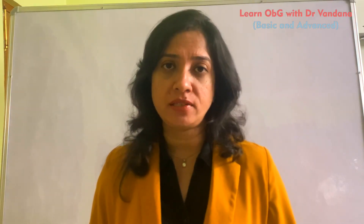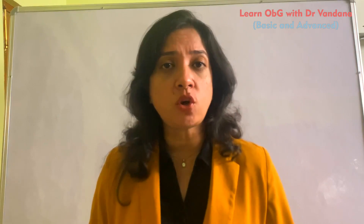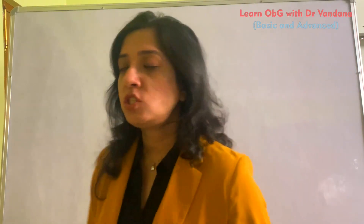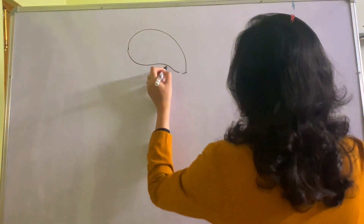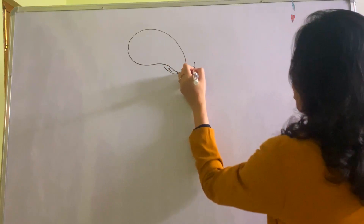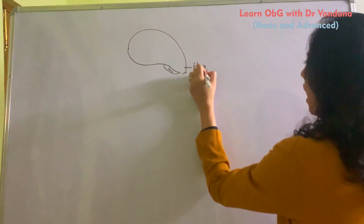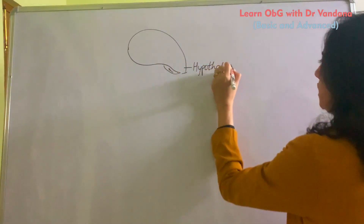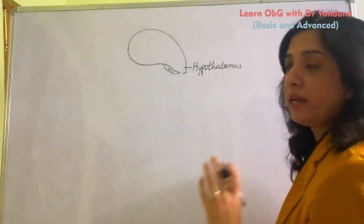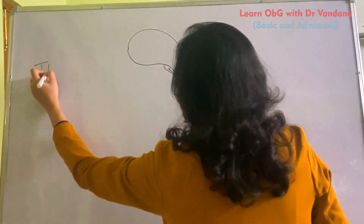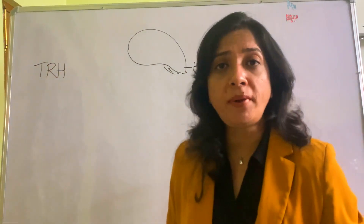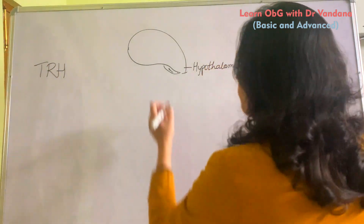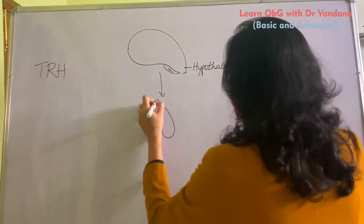Before we go into hypothyroidism of pregnancy, it is important for us to understand the physiology of the thyroid hormone. Here I am drawing the structure of the brain — a rough diagram where we have a part called the hypothalamus, which is basically a group of nuclei. There is a hormone here called TRH, also called thyrotropin releasing hormone. It functions on our pituitary gland.